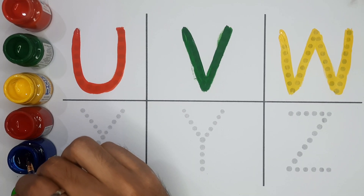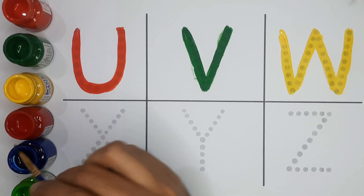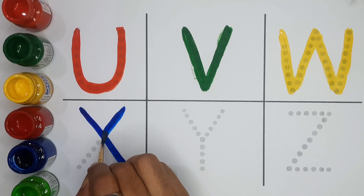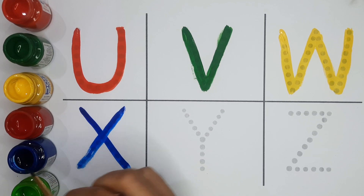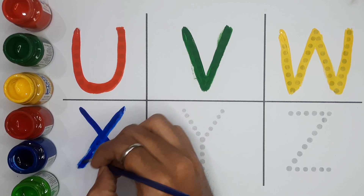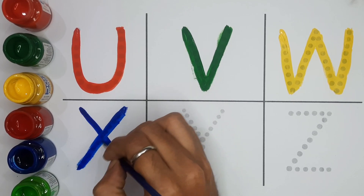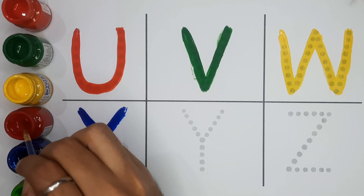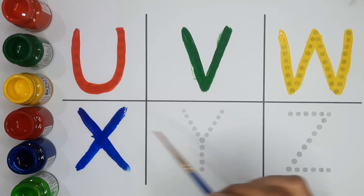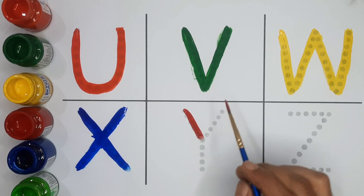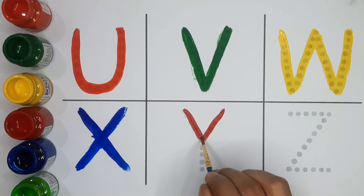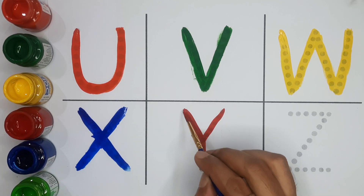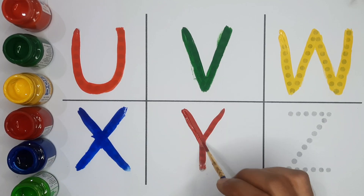Blue color. X, X for x-ray. Red color. Y, Y for yarn.